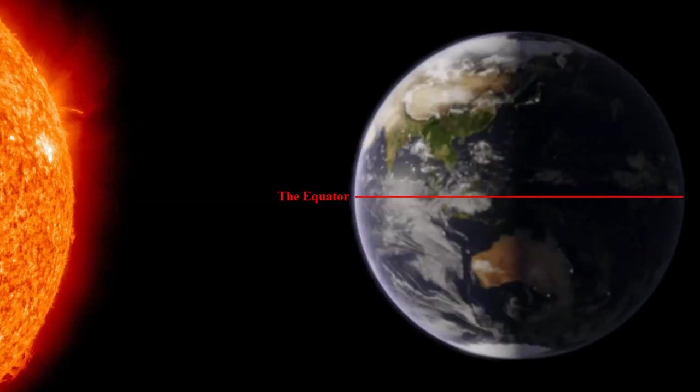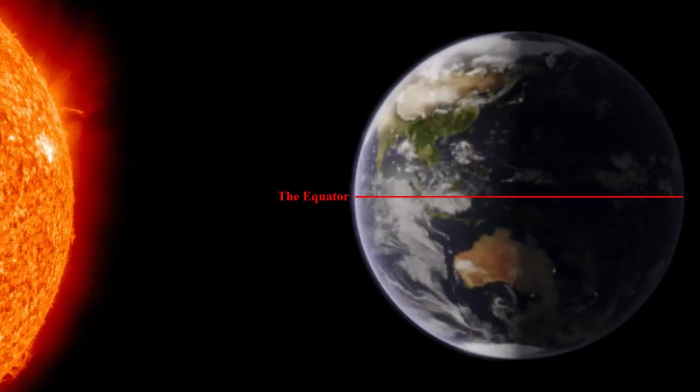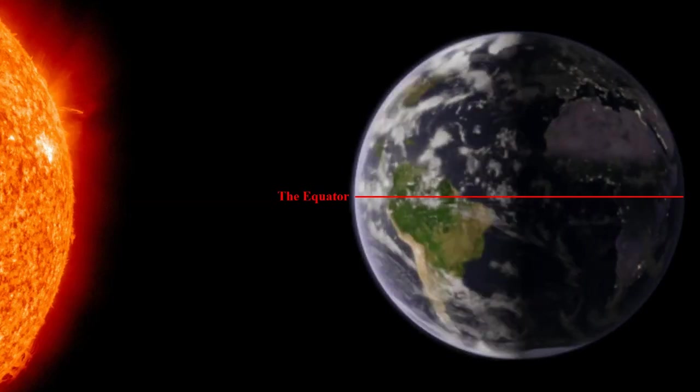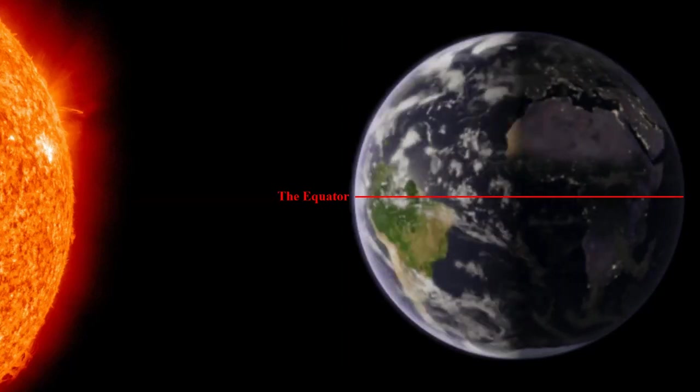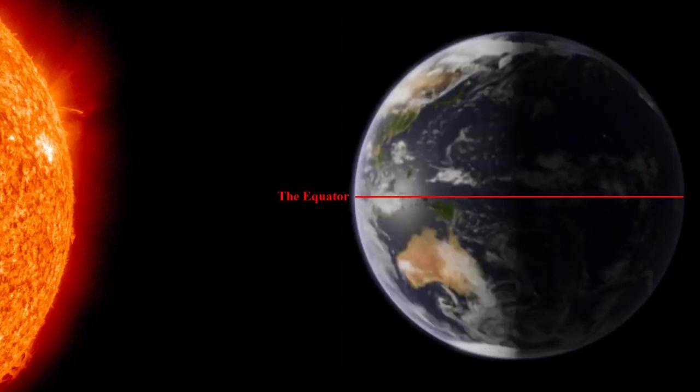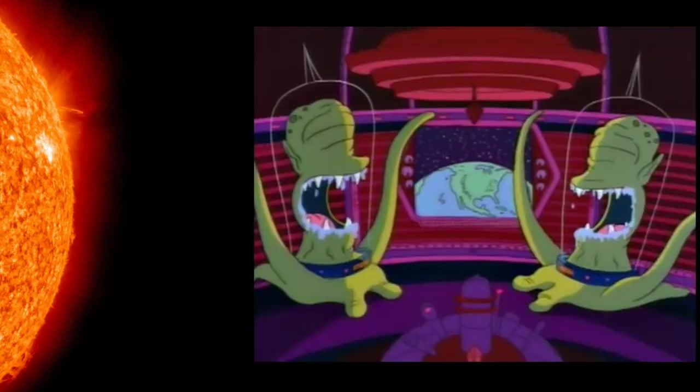Well, earlier I said that all the lines we're going to talk about are made up, and that's true to a certain extent. I mean, if you flew over the equator in a plane, you definitely wouldn't see it drawn out on the ground. But, at the same time, if a couple of aliens who had never seen the Earth before flew over it in a spaceship, they would be able to tell where our planet's equator is just by looking at the planet from space.